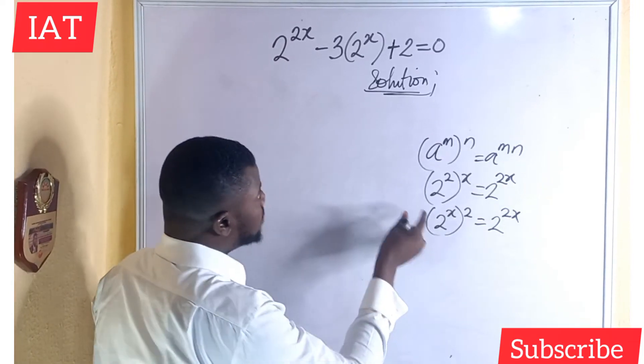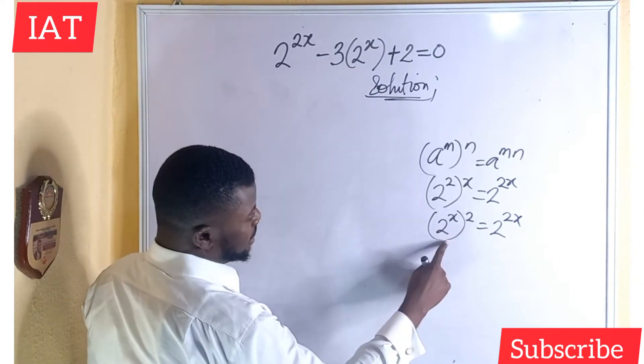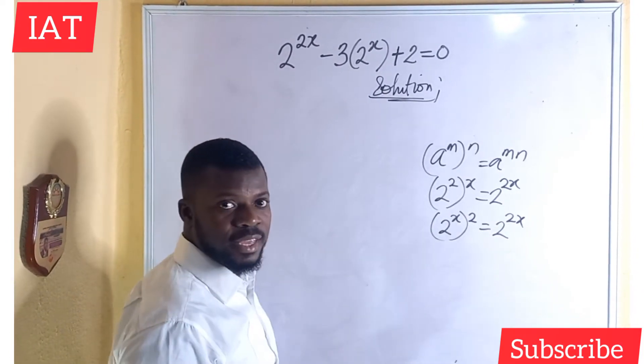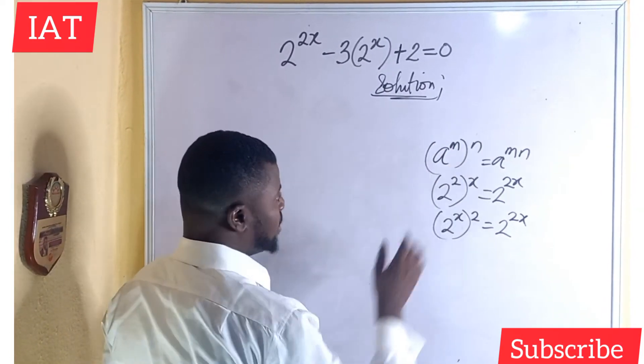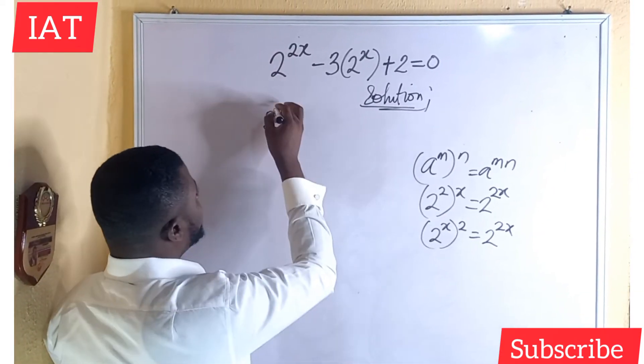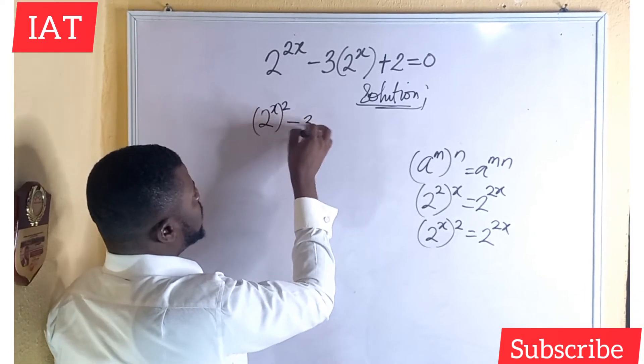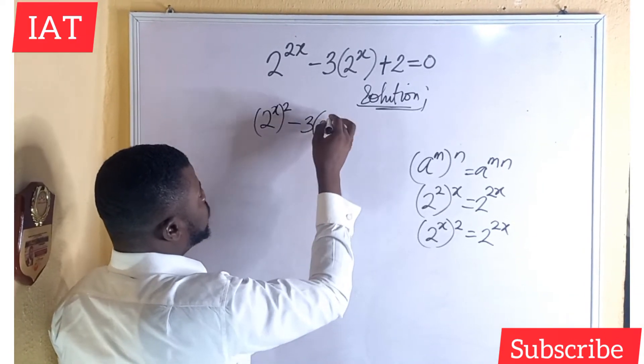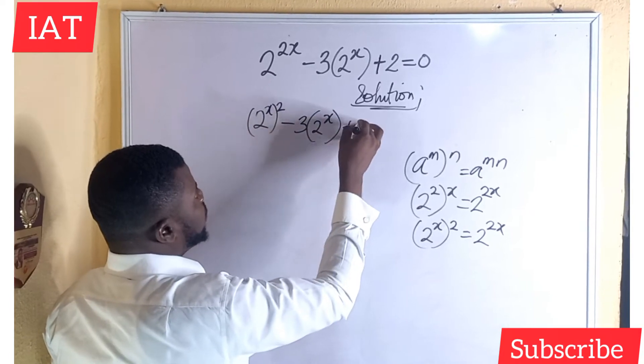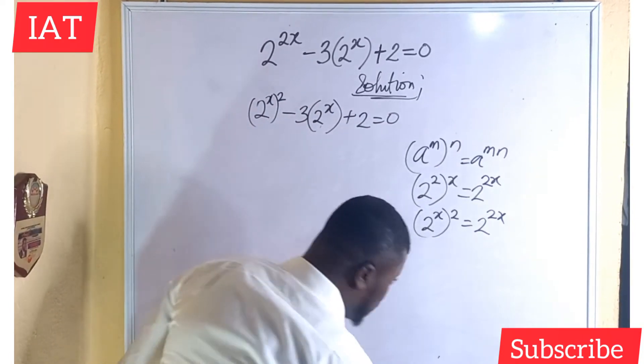So I want to express this as this one in this form so that we have this looking alike. That is the idea, right? I hope you understand. So this expression can be written as 2 to the power of x all squared minus 3 into 2 to the power of x plus 2 equal to 0. That is what I was trying to achieve and we have achieved that.